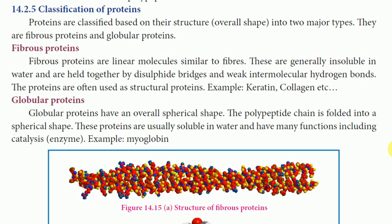There are fibrous proteins and globular proteins. Fibrous proteins are linear molecules, similar to fibers. These are generally insoluble in water and are held together by disulfide bridges and weak intermolecular hydrogen bonds. These proteins are often used as structural proteins. Examples include keratin and collagen.